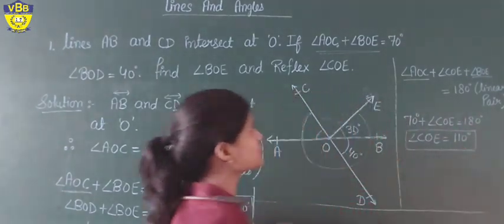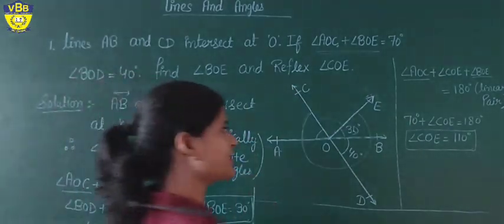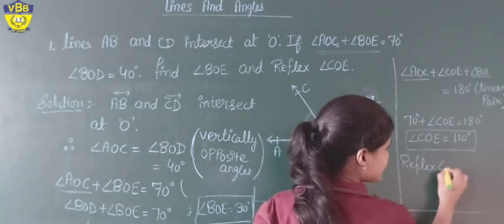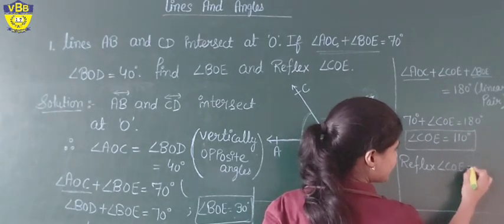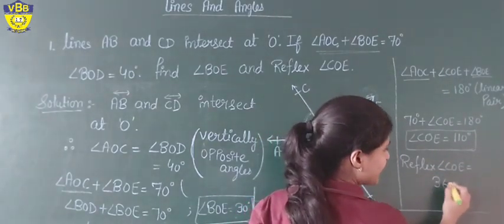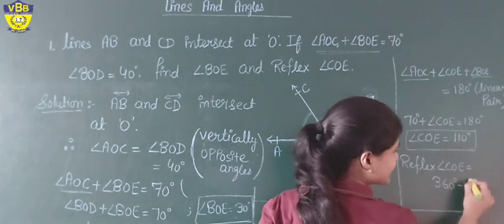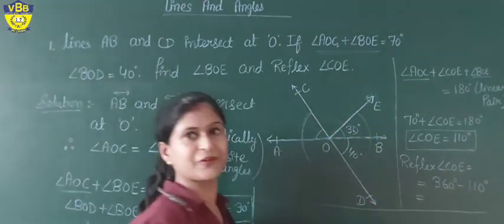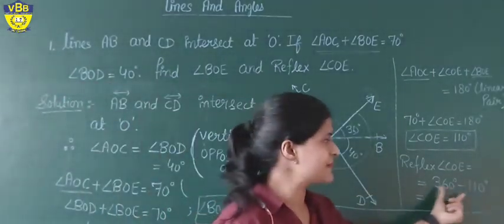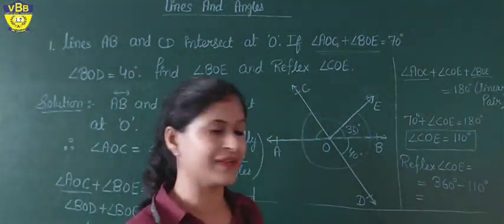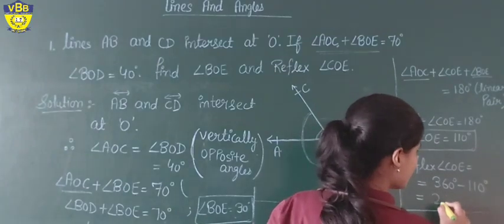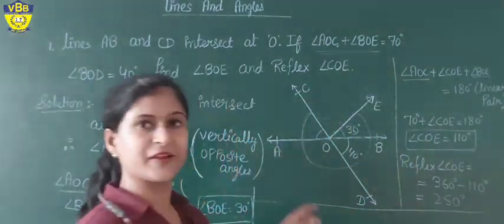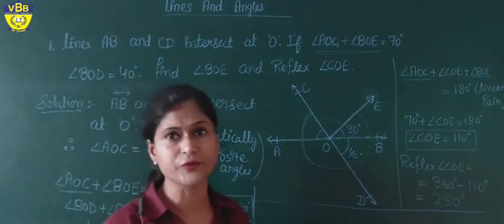And if you want to find the reflex of COE, reflex angle COE will be 360 minus the angle value: 360 minus 110 equals 250 degrees. So reflex of COE is equal to 250 degrees.